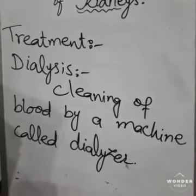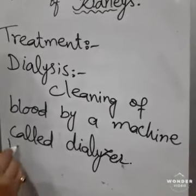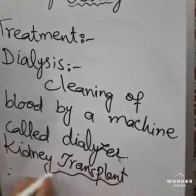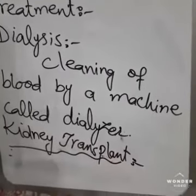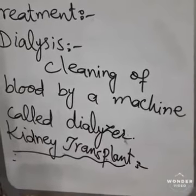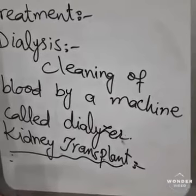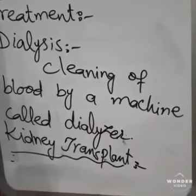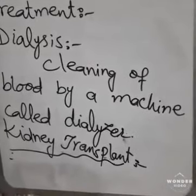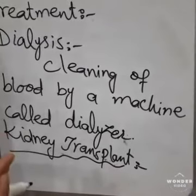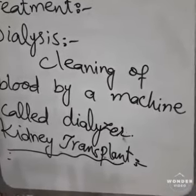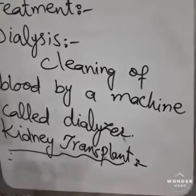This is the process known as dialysis. The next method is kidney transplant. This method is used at the last stage of kidney failure — if the kidney is not working at all, this is the last option. In this method, the donor of the kidney may be a blood relative or any other close relative.